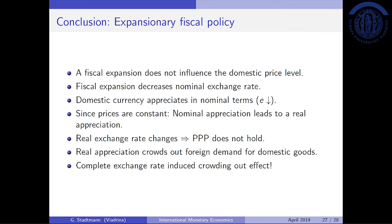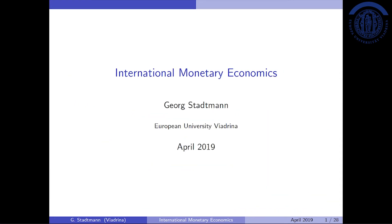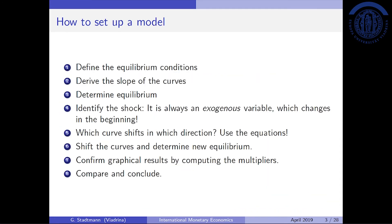This completes the analysis of expansionary fiscal policy. Across all the videos in this series, we went through all the steps: step one — defining the equilibrium condition; step two — deriving the slope of the curves; step three — determining the equilibrium. We then analyzed two different shocks: a shock in money supply and a shock in government spending.